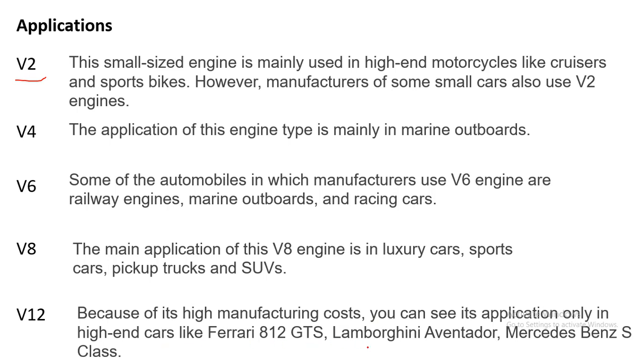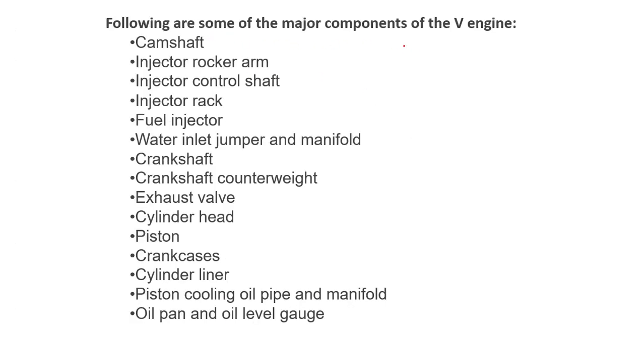V engines are compact, so we can have more IC engines connected to the crankshaft and get better power. But the manufacturing cost is higher because of the complexity. The major components of the V engine include camshaft, injector, rocker arm, injector control shaft, and so on. These components are common to any IC engine, like V engines or inline engines.